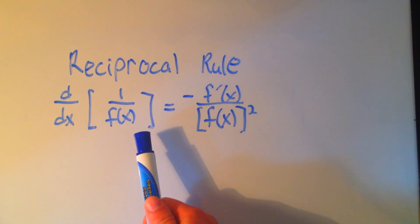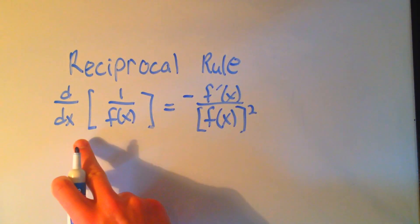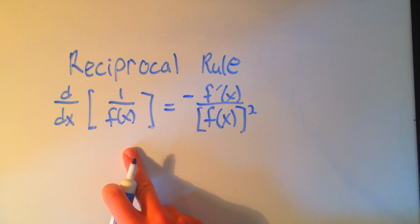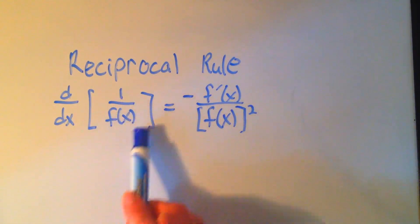You have the reciprocal rule when you have 1 over some function x. You could always use the quotient rule on this, but the special case is when it's just 1 over this thing.